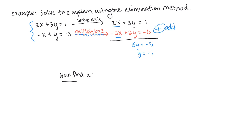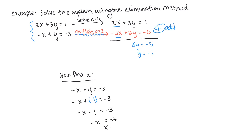The final step, just as in the substitution method, is to substitute y equals negative 1 back into one of the original equations to find x. Using the bottom equation, negative x plus negative 1 equals negative 3 gives negative x minus 1 equals negative 3. Adding 1 and dividing by negative 1, we get x equals 2. So the solution is the ordered pair (2, negative 1). Which method you use is up to you — both should work every time.